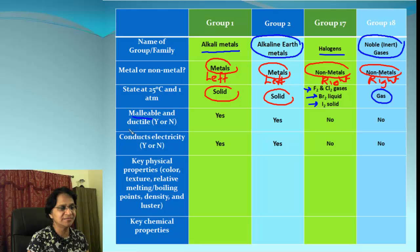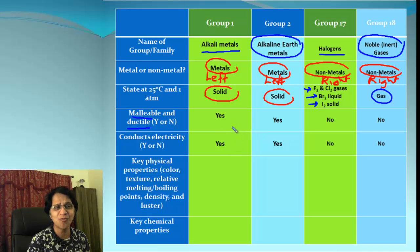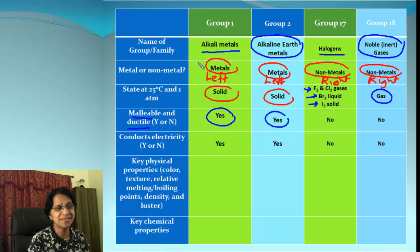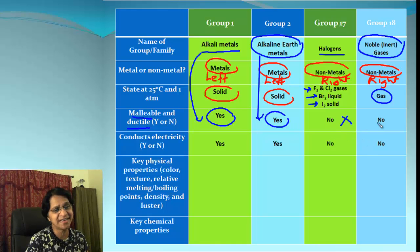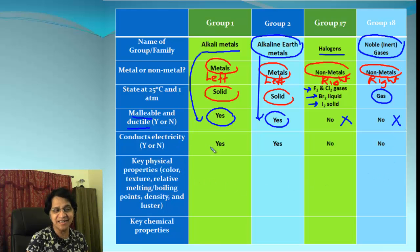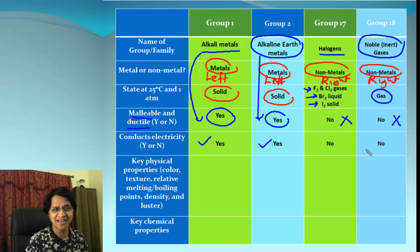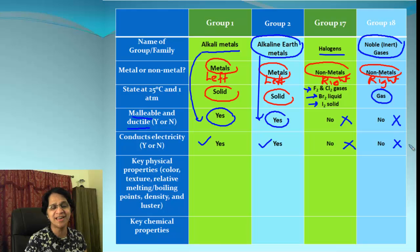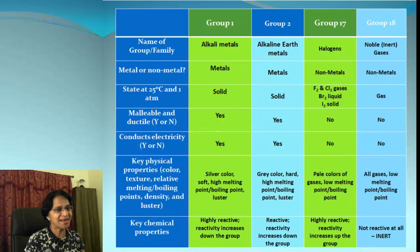Malleable and ductile are properties for substances which can be turned into thin sheets or drawn into thin wires. That applies to group 1 and group 2 because they are metals. Group 17 and group 18 cannot be malleable and ductile. For electrical conductivity, the answer is yes for group 1 and group 2, since those are metals that can be drawn into wires, and no for both group 17 and group 18.